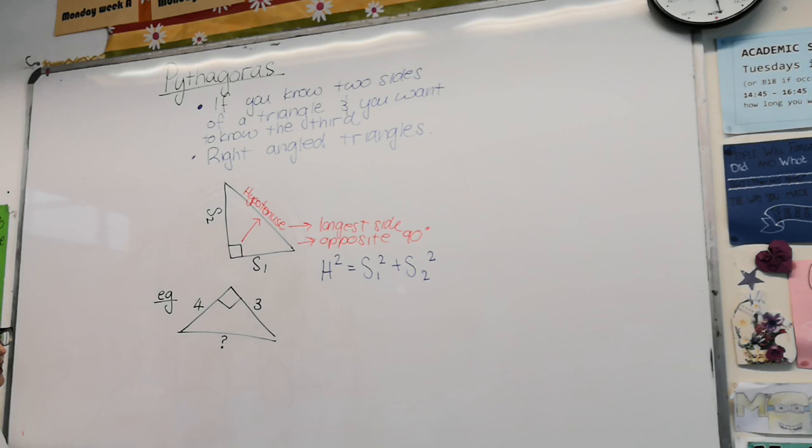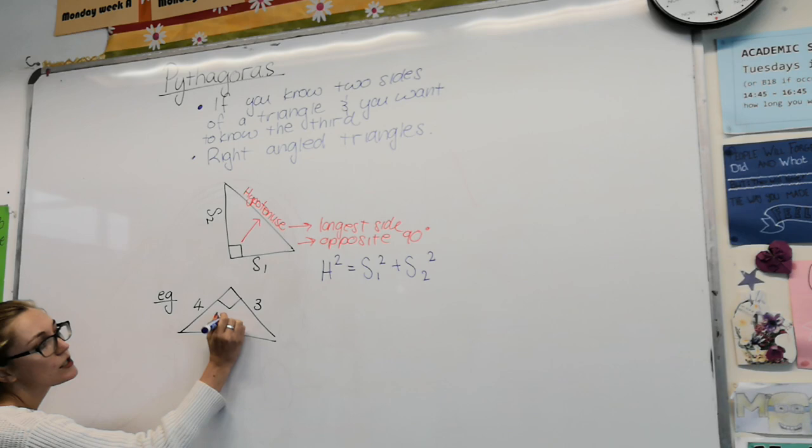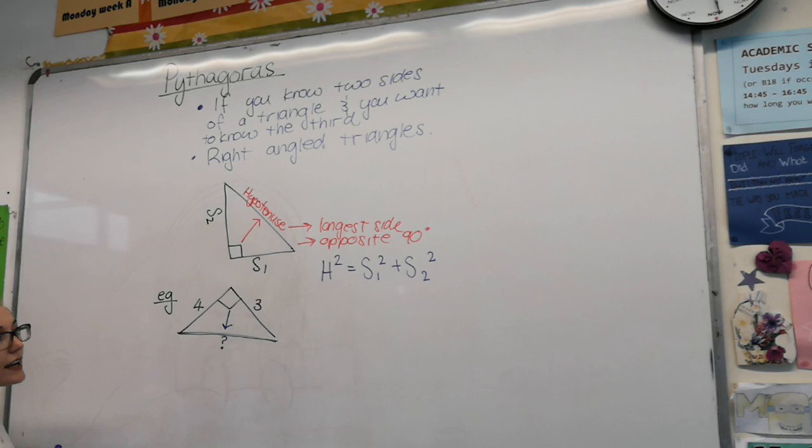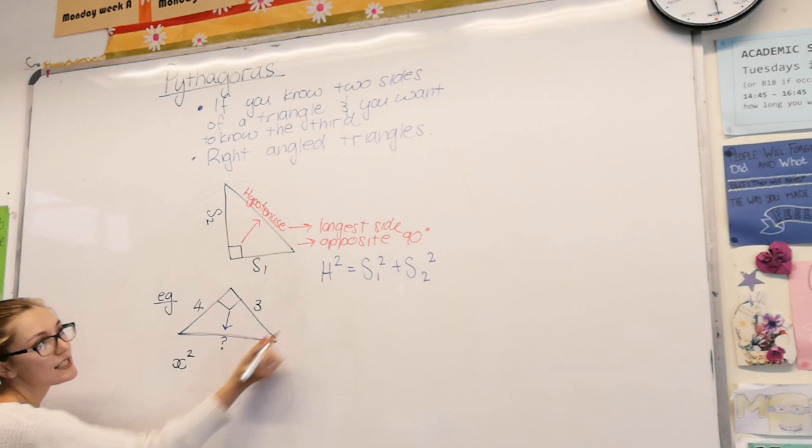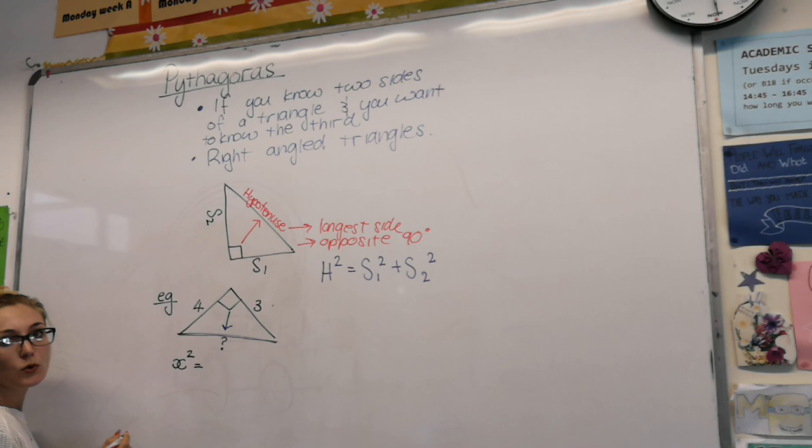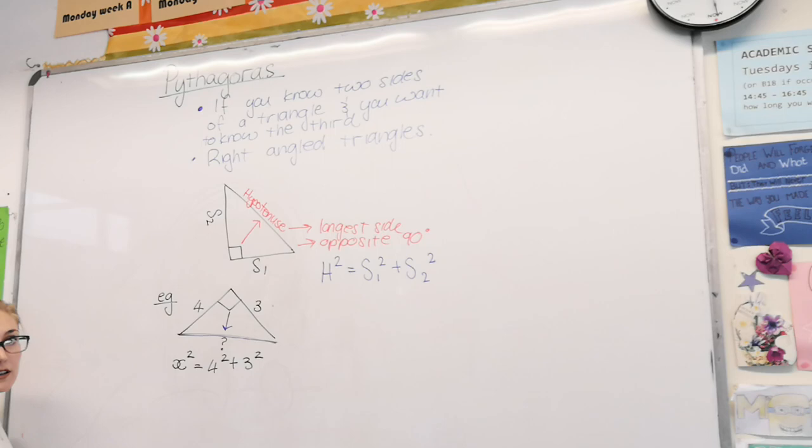Now when you do Pythagoras' theorem, it's very important. The first thing you do is identify your hypotenuse. So in this question, the hypotenuse is this side over here, and it is the side that we are actually trying to find. So when we go ahead and put this into Pythagoras' theorem, the thing we don't know is the hypotenuse. So the hypotenuse comes first. The hypotenuse squared equals the other two sides squared and added together. So it's 4 squared plus 3 squared.